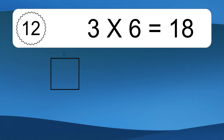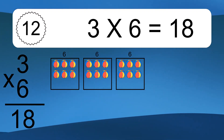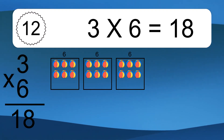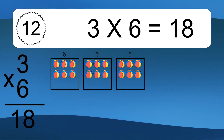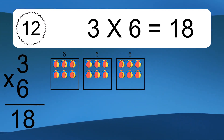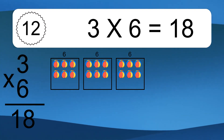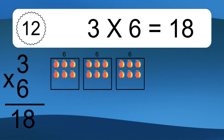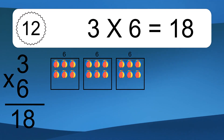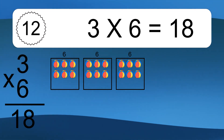3 times 6 equals what? 3 times 6 equals 18. We have 3 boxes, and each box has 6 colorful balls inside. If you count all the balls in all the boxes together, you will have 3 times 6 balls. This equals 18 balls.